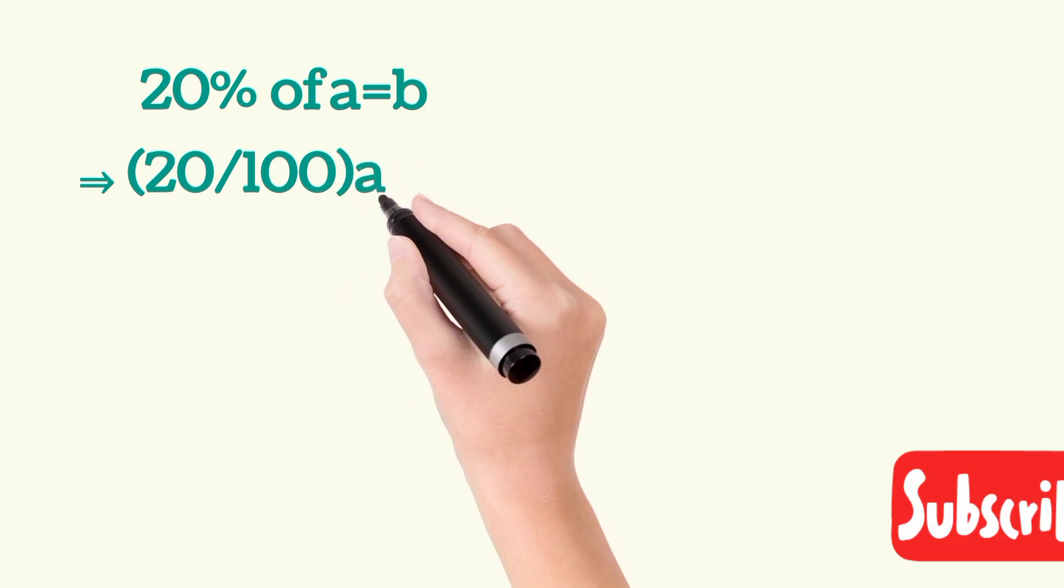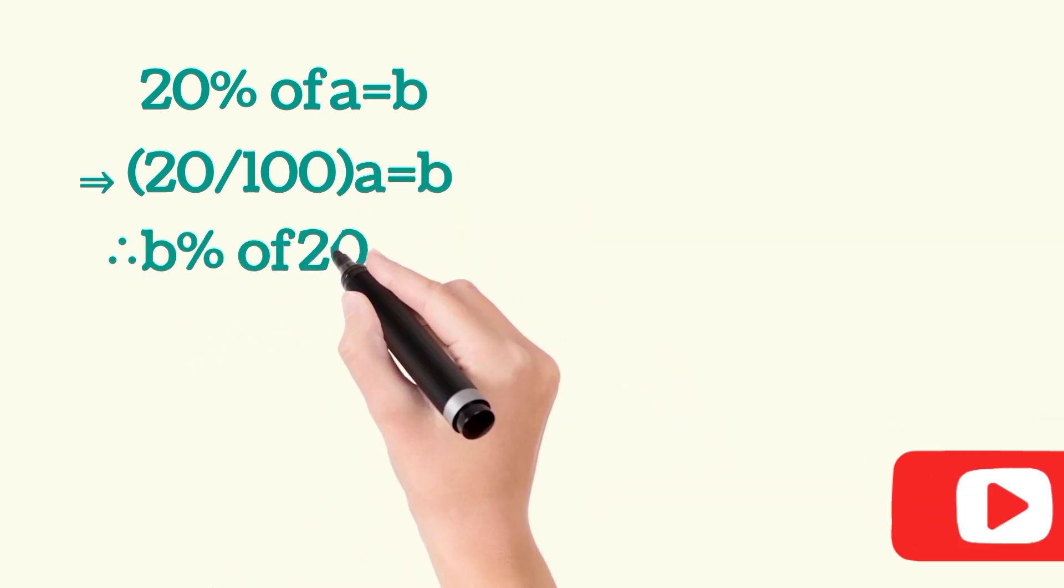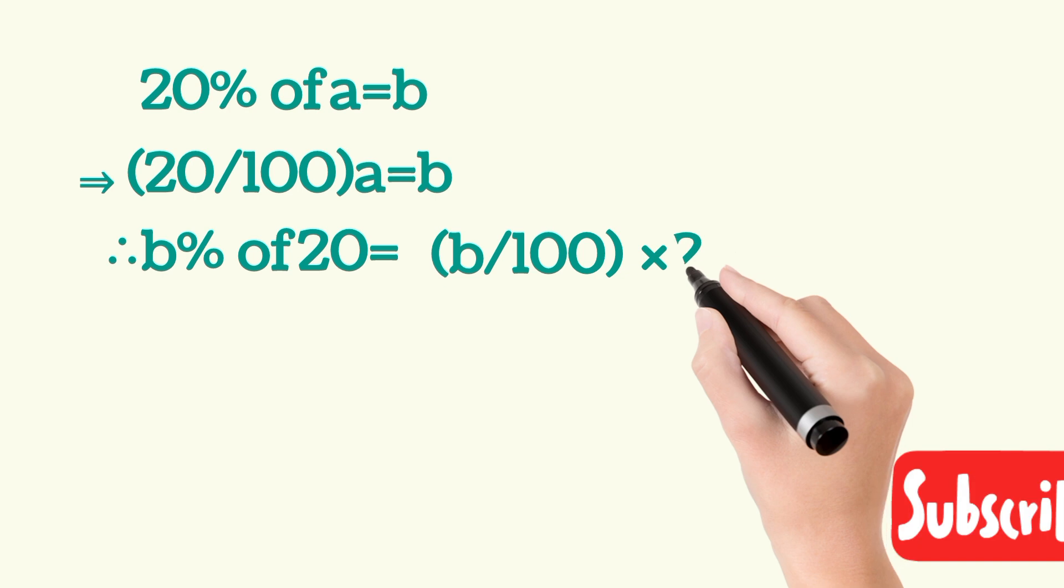20% of A is equal to B. So, 20 upon 100 into A is equal to B. Now, we have to find out B percent of 20, that is B upon 100 into 20.